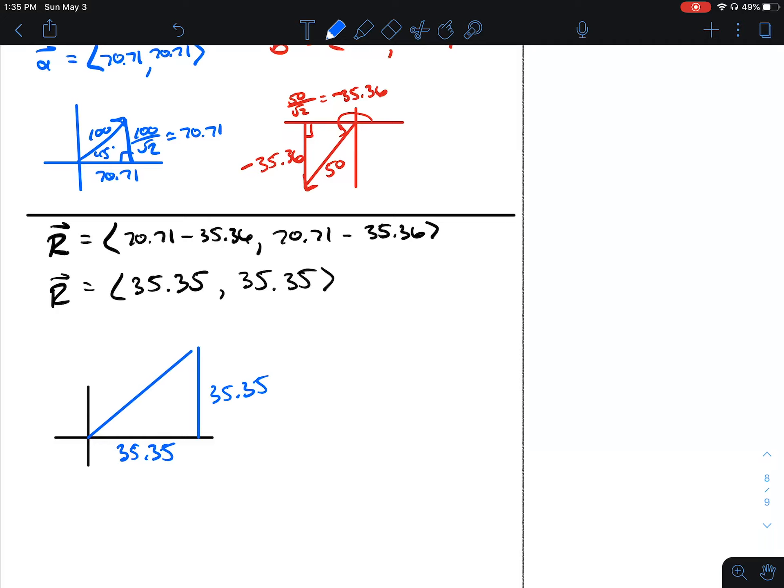We want to find the magnitude of this vector, which is the diagonal. We want to find the angle. Hopefully you can see this angle is going to be 45 because we have this right triangle.